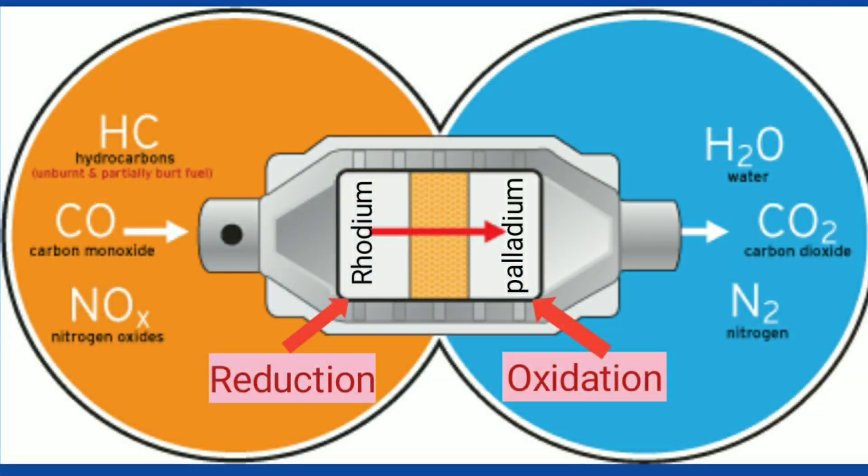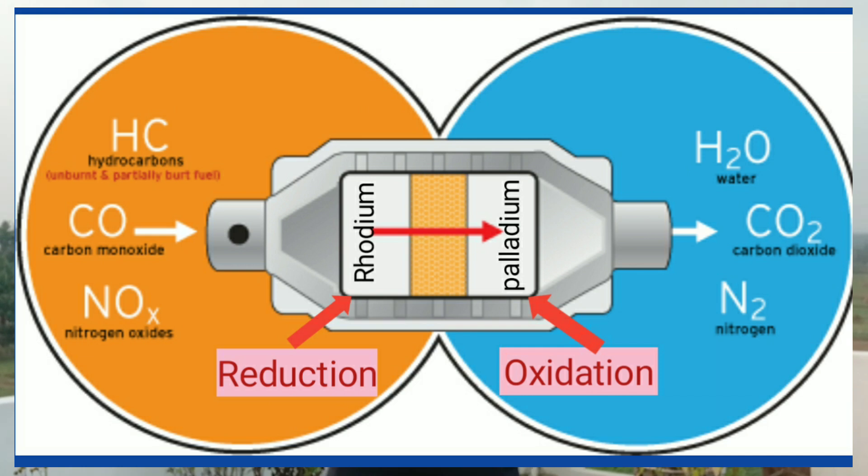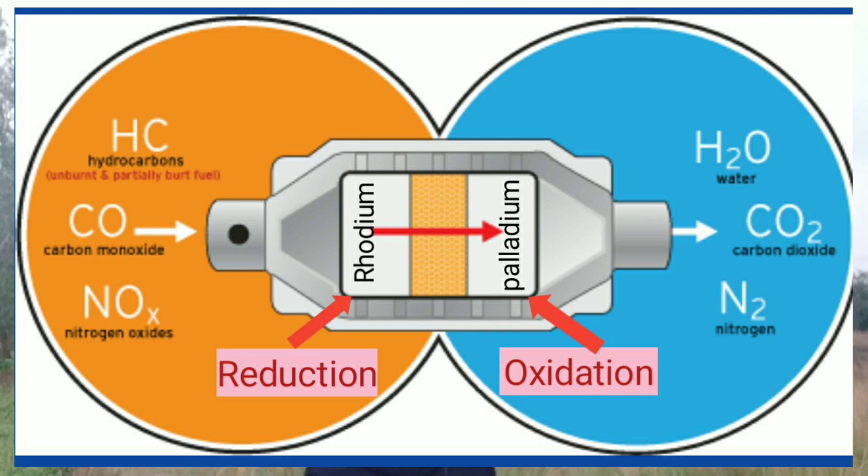Nitrogen molecules are separated so that nitrogen no longer carries oxygen. Hydrocarbon carbon molecules are converted — carbon dioxide (CO2) plus H2O is the result, which occurs in the combustion chamber.